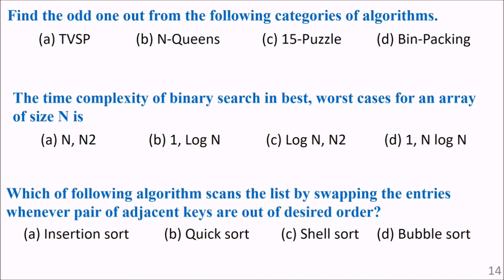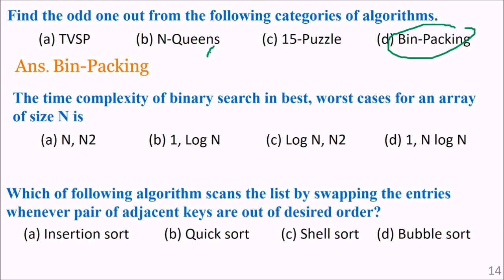Find the odd one out of the following categories of algorithms. The answer is bin packing, because all other options follow a common background or category while bin packing does not fit.